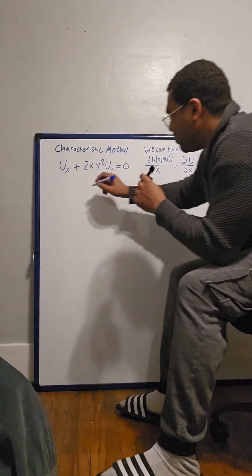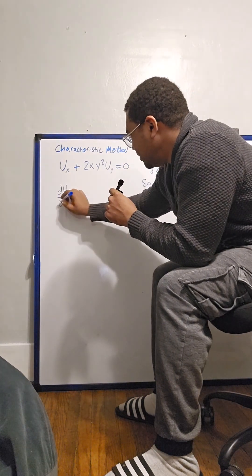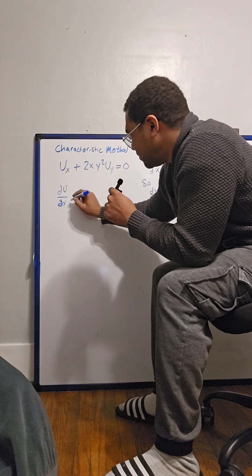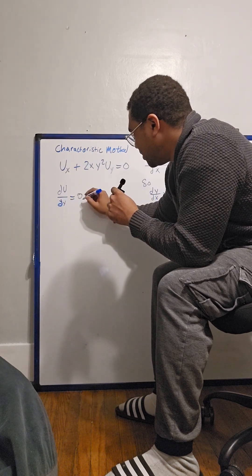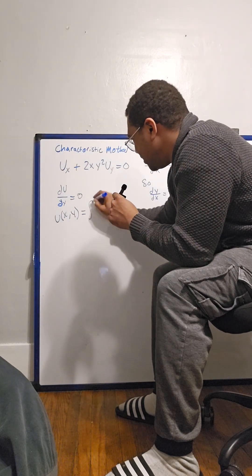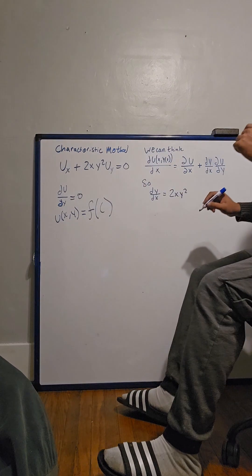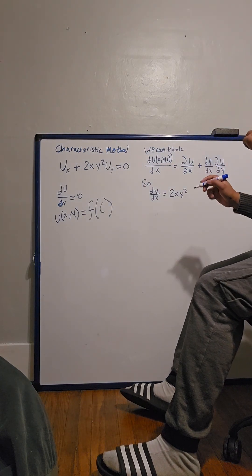Now we know that du dx is equal to zero, so that means u of xy must be equal to some function along a characteristic curve c or a constant c.